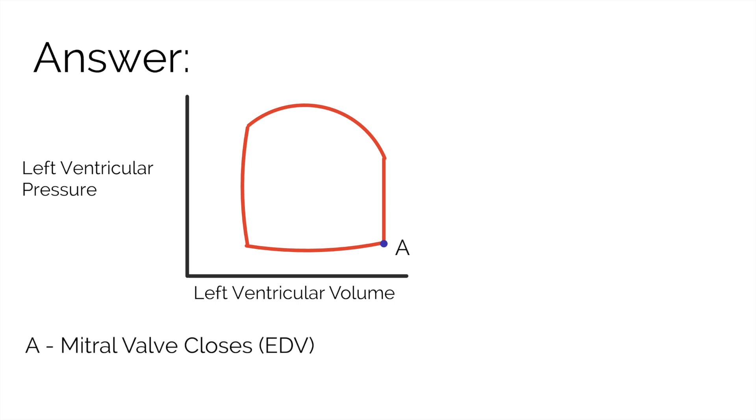Let's begin at point A. Point A is after blood has entered the left ventricle from the left atrium, and now the mitral valve has closed. Filling of the left ventricle occurs in diastole. So the volume in the left ventricle at point A is called the end diastolic volume, or EDV. Point A also represents the beginning of systole.